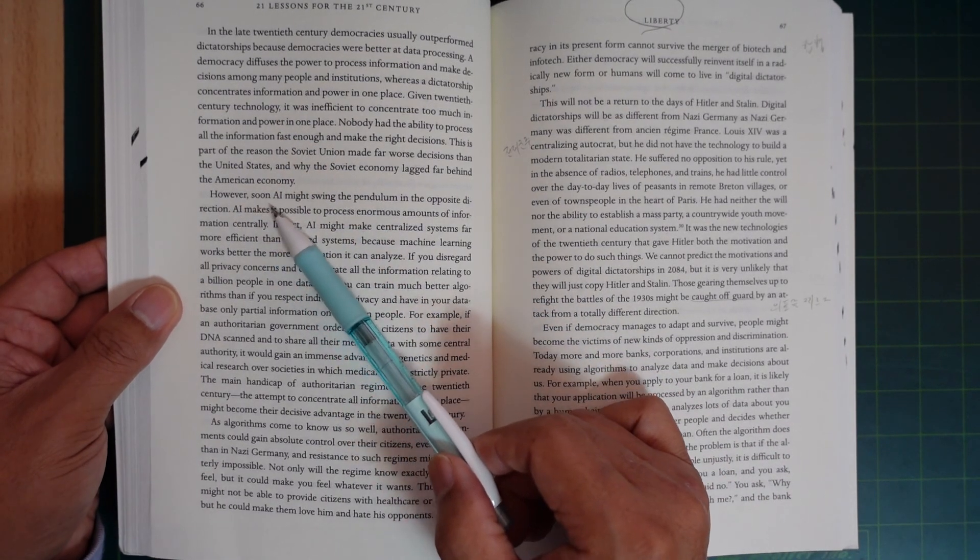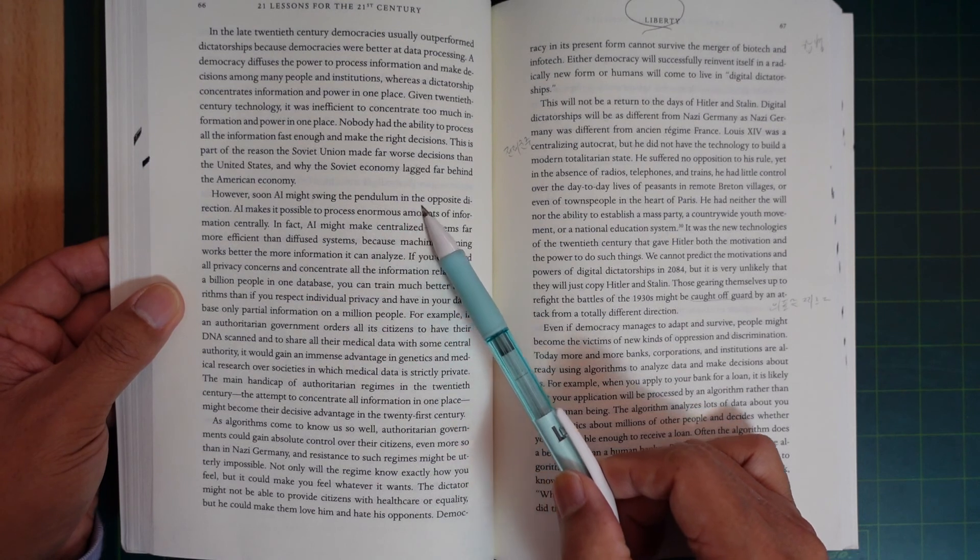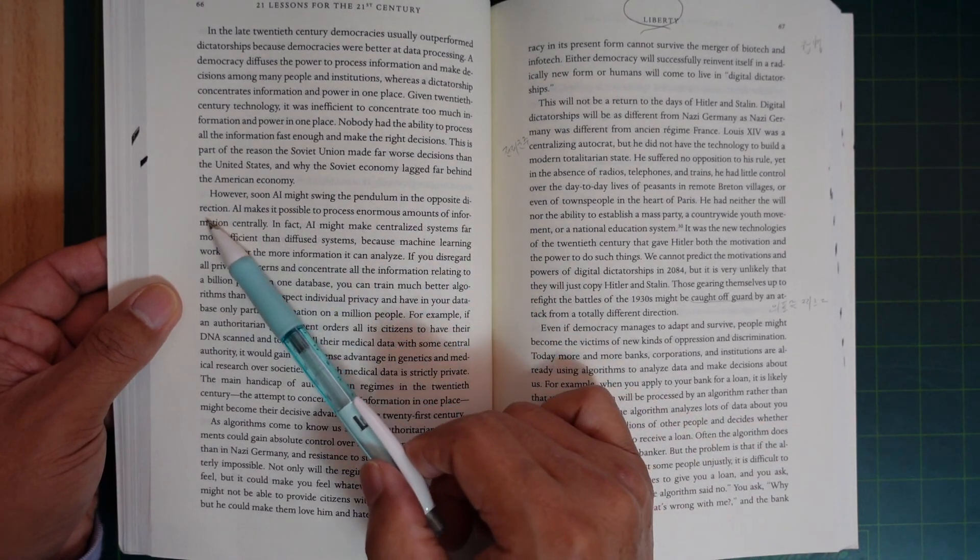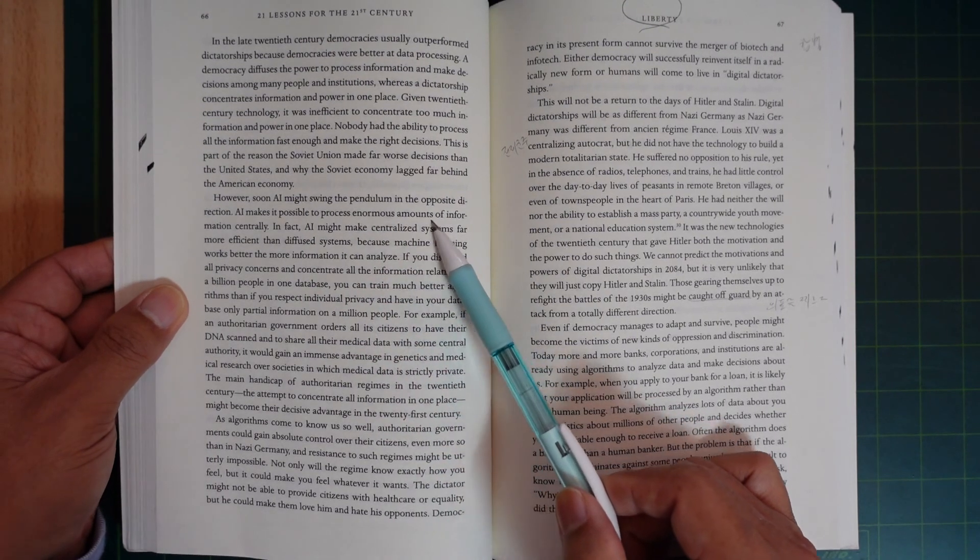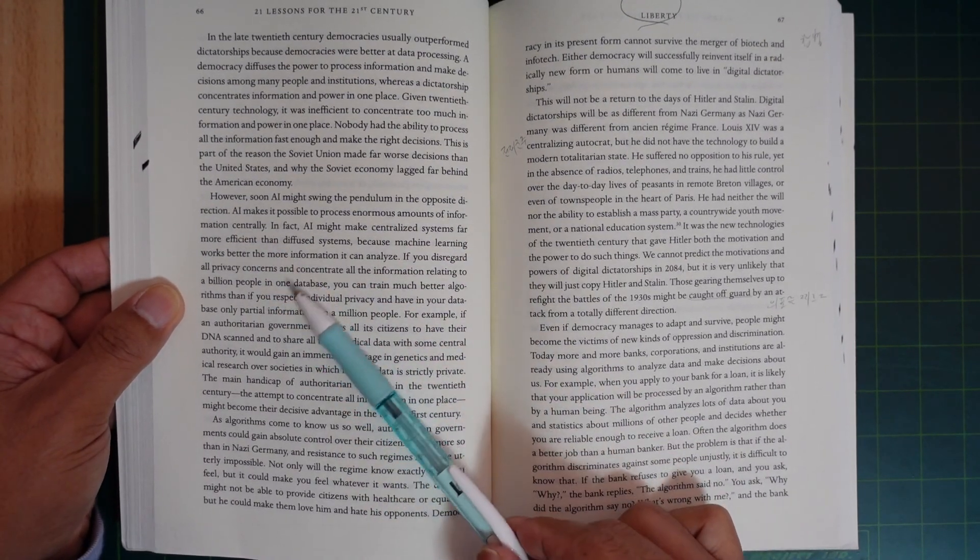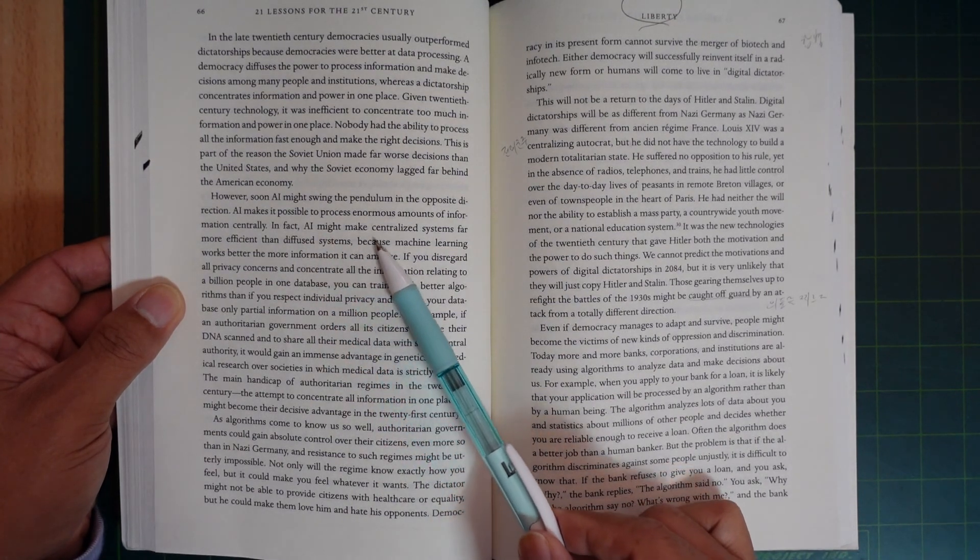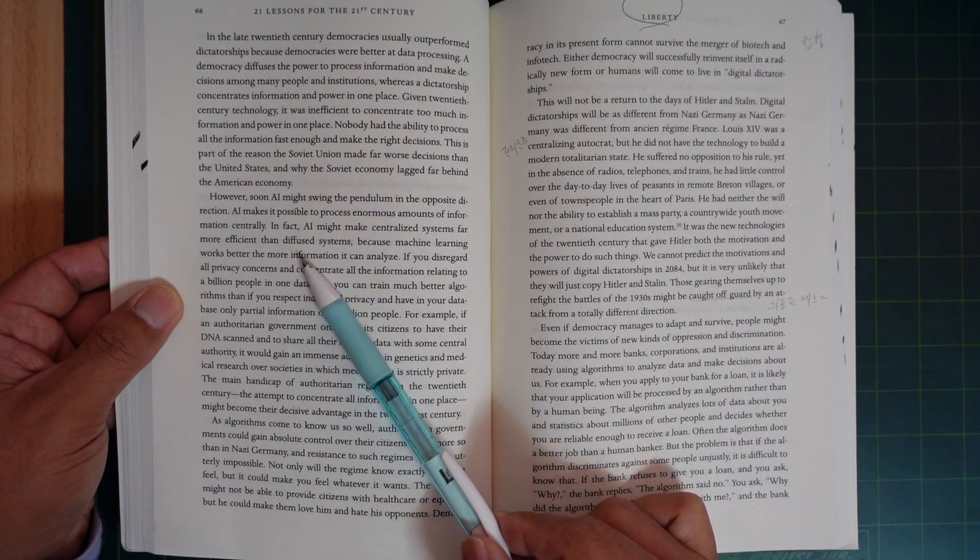However, AI might swing the pendulum in the opposite direction. AI makes it possible to process enormous amounts of information centrally. In fact, AI might make centralized systems far more efficient than diffused systems.